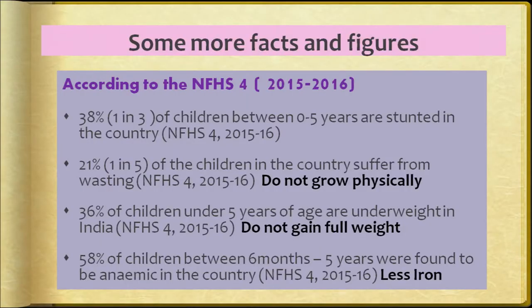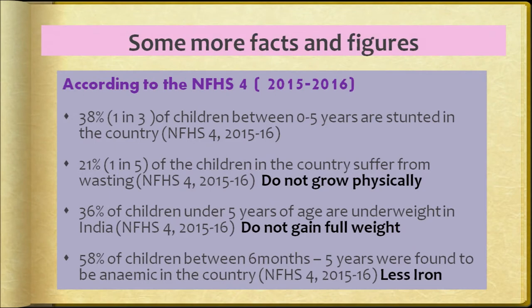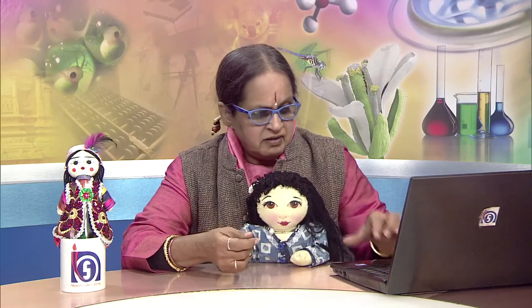36% of children under 5 years of age are underweight and don't get enough diet to gain full weight. 58% of children between 6 months to 5 years were found to be anemic, meaning they didn't get enough nutrients and are low in iron. If a child is hungry, they are not going to be able to concentrate and learn enough skills to be a happy, contributing member of society, because learning skills will lack due to less concentration.